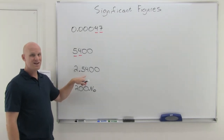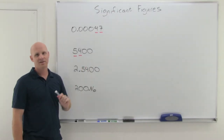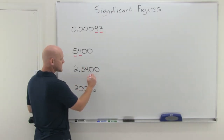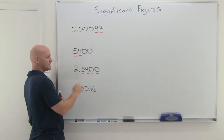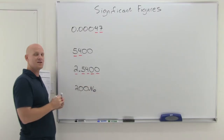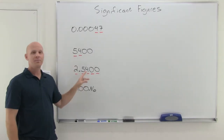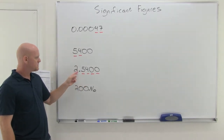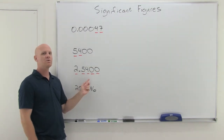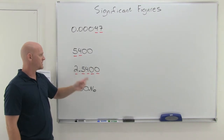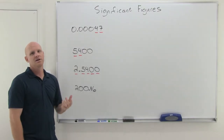That's going to be different from the next example, because if you end a number in zeros to the right-hand side of the decimal, those zeros are going to be significant. So not only are the 2, the 5, and the 4 significant, but these two zeros are significant as well. This is a way of saying we know this number really, really well. So 2.5400 is really precise — compared to about 5,400 miles give or take a hundred.